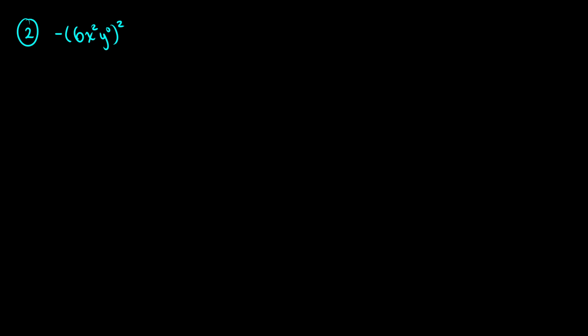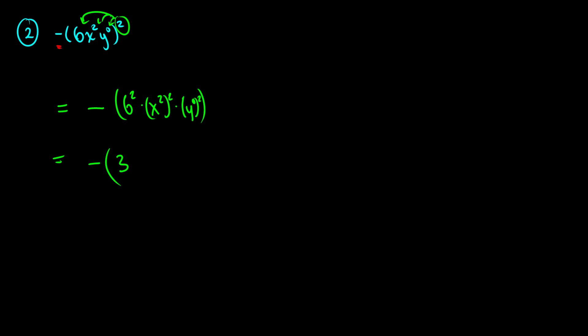Next question. There's a negative sign out front, so it does not get squared — we keep it out front. We distribute the 2 onto everything inside: 6 squared times x squared squared times y to the zero squared. 6 squared is 36. x squared squared gives x to the fourth, since 2 times 2 is 4.